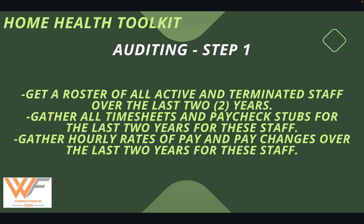You're probably asking where the two years comes from. The government is going to do a two-year look back — the statute of limitations for wage violations is two years. If there's willful disregard, meaning you did it even though you knew it was wrong, it goes to three years. So if you want to protect yourself, you can go up to three years, especially if you knew you did something you weren't supposed to.